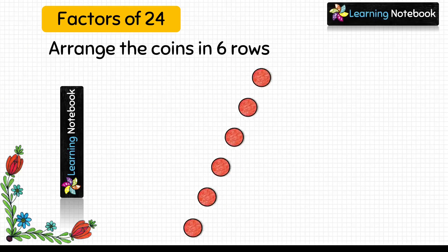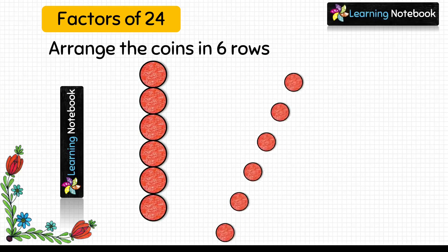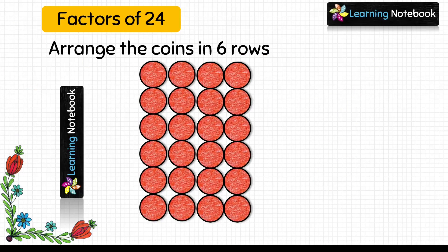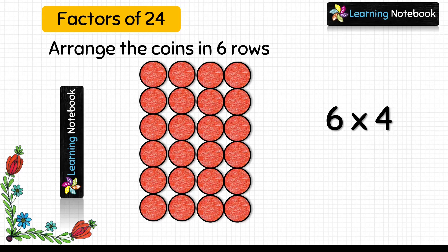Next, we will arrange these 24 coins in six rows — so each row has got 4 coins. So this arrangement can be expressed as 6 into 4. But students, we have already covered it as 4 into 6. So we will stop here.